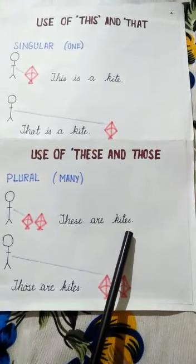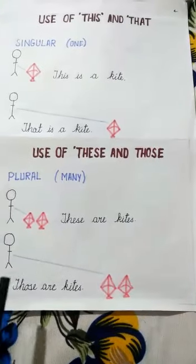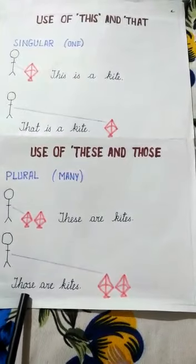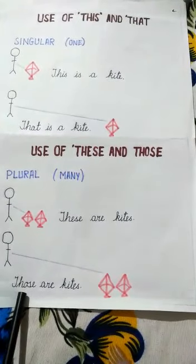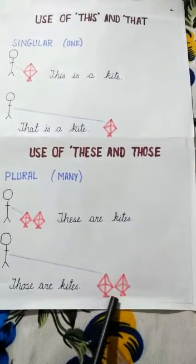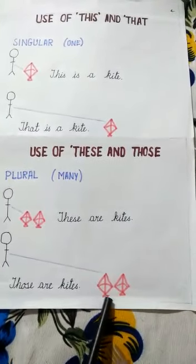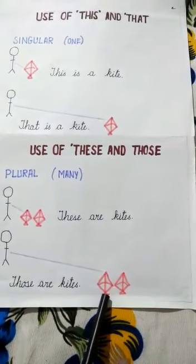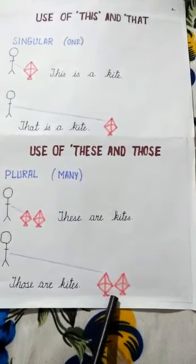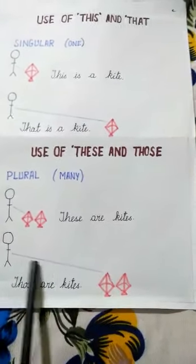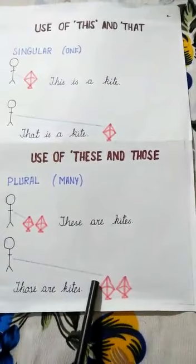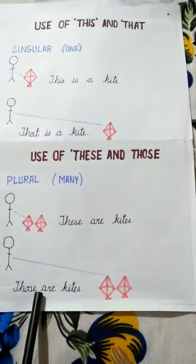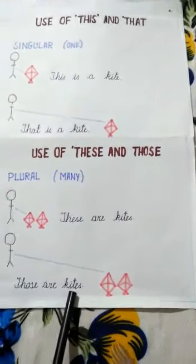Those — we use those to talk about more than one person, places, animals or things that are far from us. For example, those are kites.